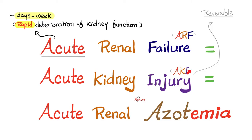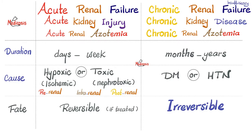Acute renal failure is the same as acute kidney injury, which is the same as acute renal insufficiency or acute renal azotemia. It's called 'acute' because there is rapid deterioration of kidney function within days or weeks. It's called 'injury' because for the most part it is reversible. Acute kidney injury could be pre-renal, intrarenal, or post-renal.